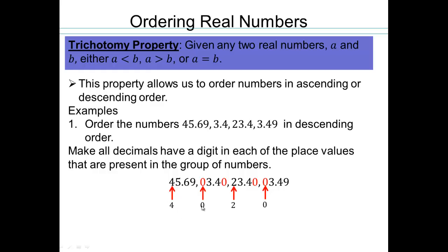We start with the tenths place and look at the largest number there. We have 4, 0, 2, 0. 4 is the largest, so that stays on top. But here we have 0 and here we have a 2, so these two numbers should switch. Once we've done that, now we have 4, 2, 0, 0.